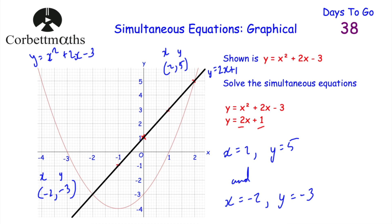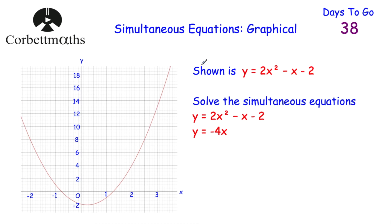Let's look at our last question. We've got a quadratic with equation y equals 2x squared minus x minus 2, and we've been asked to solve the simultaneous equations y equals 2x squared minus x minus 2 and y equals minus 4x. Feel free to press pause and solve this now.